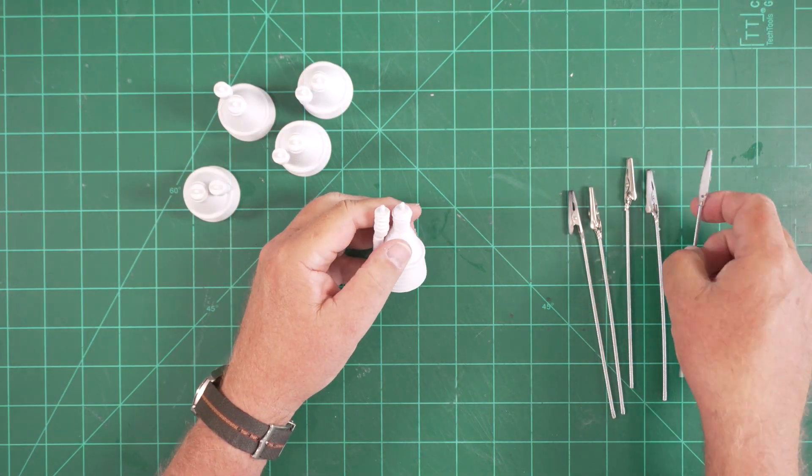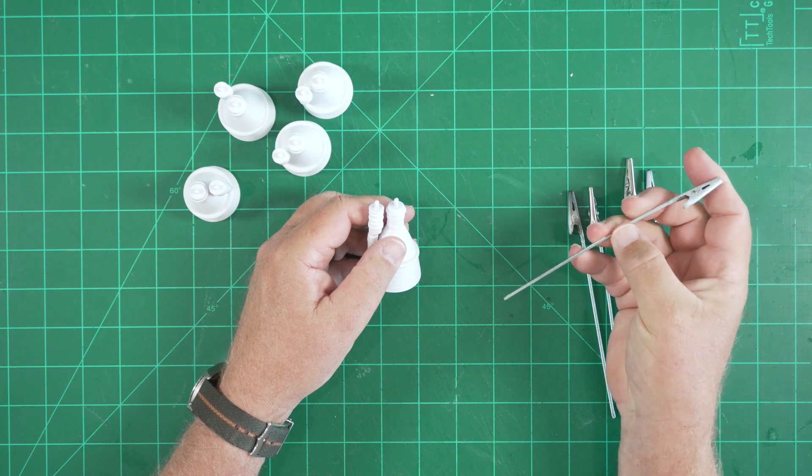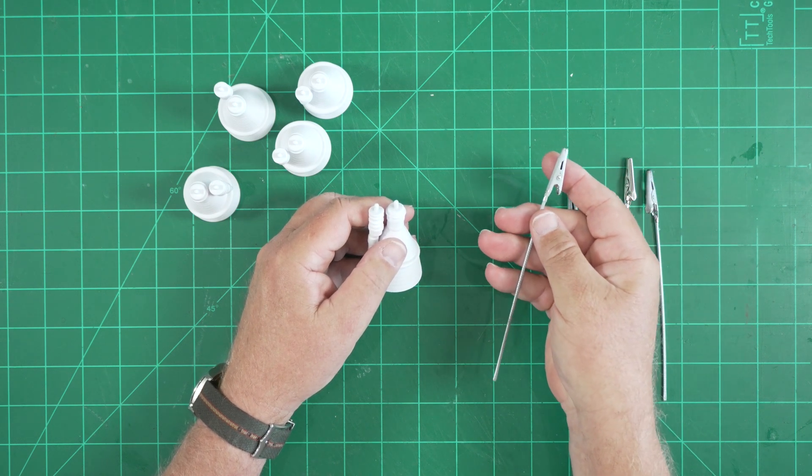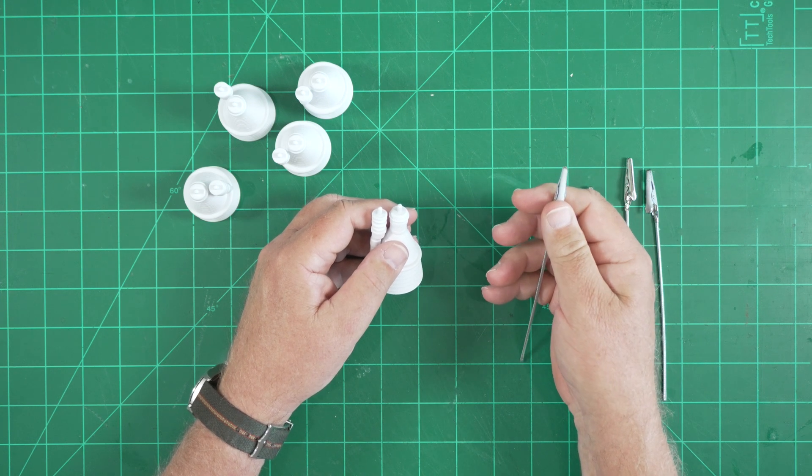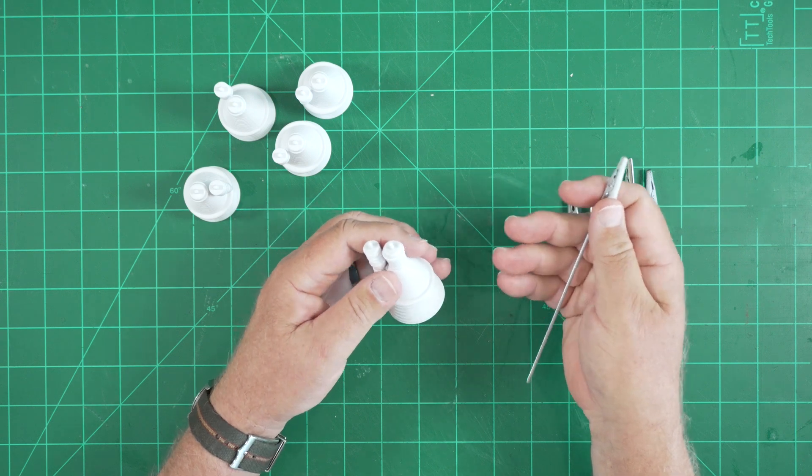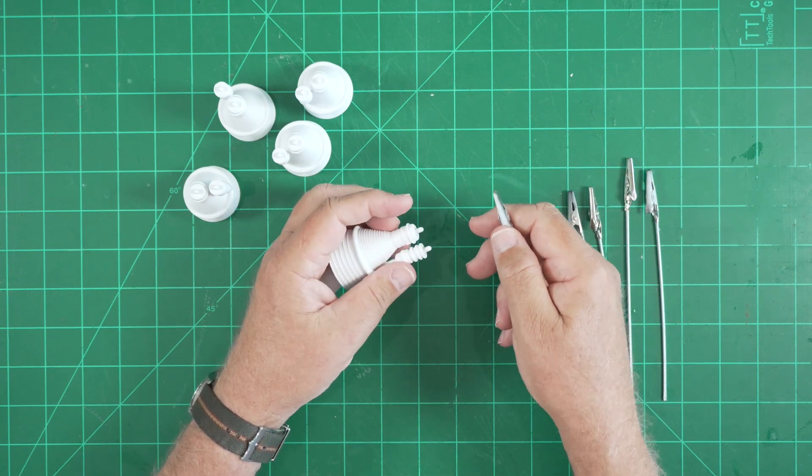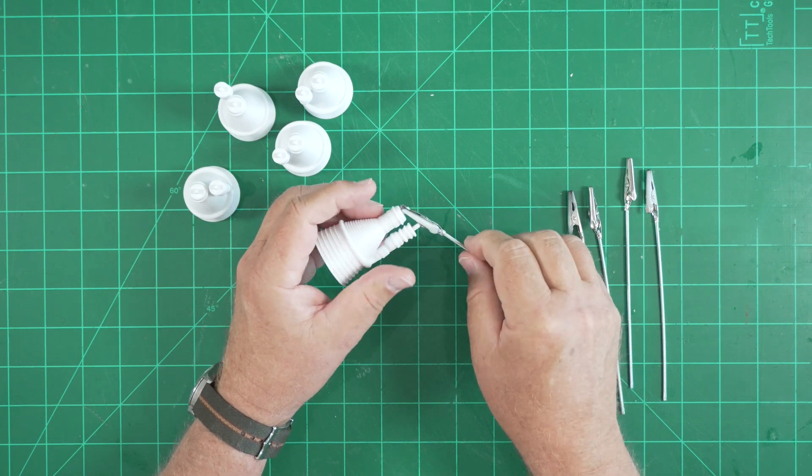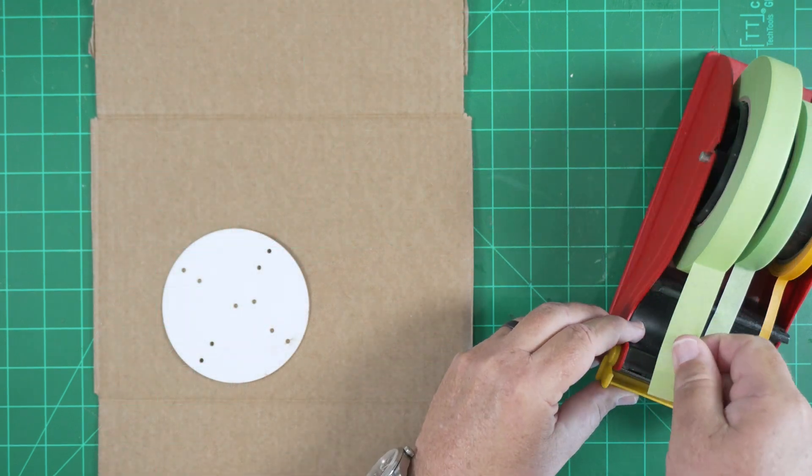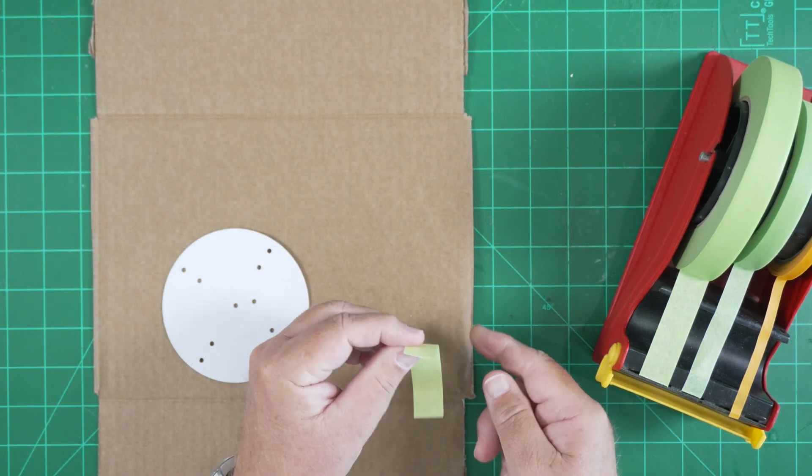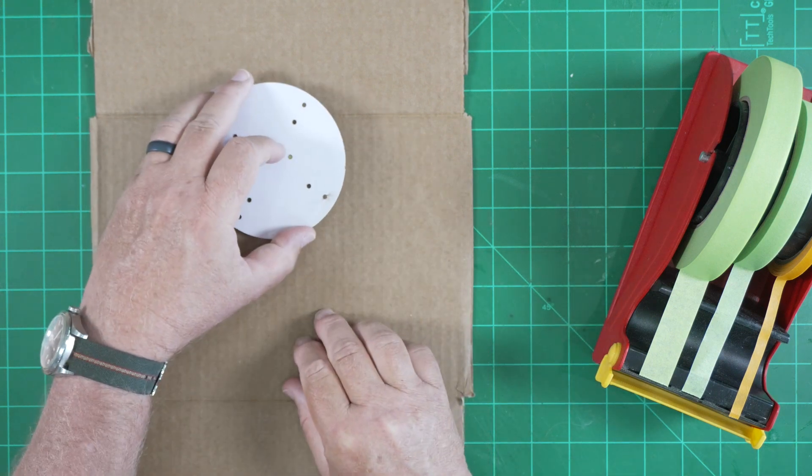As we prime our nozzles we'll be using these clips. These are alligator clips attached to a short length of cable and these are sold in craft stores or online as photo clips. You clip photographs onto them and stick them in flower arrangements or whatever. They're great for this purpose. You just clip it onto the tab at the top of the nozzle. We'll also be priming the base plate for the nozzle assembly. To help us out there we'll use a tape tag to attach it to a piece of scrap cardboard.